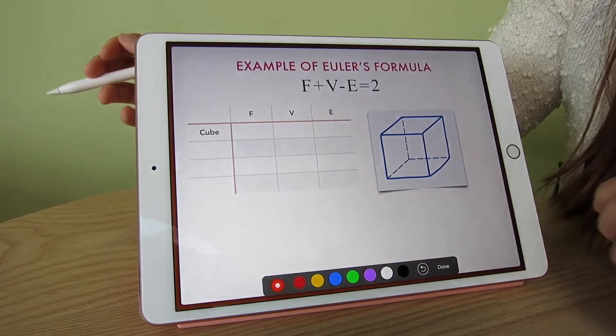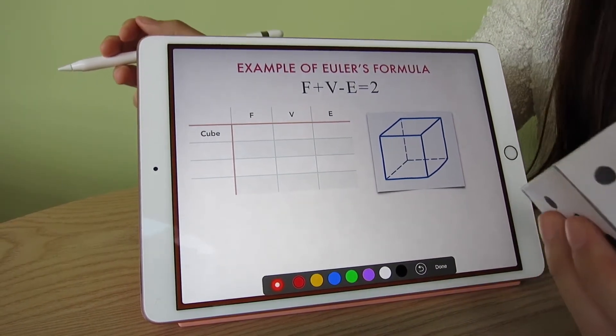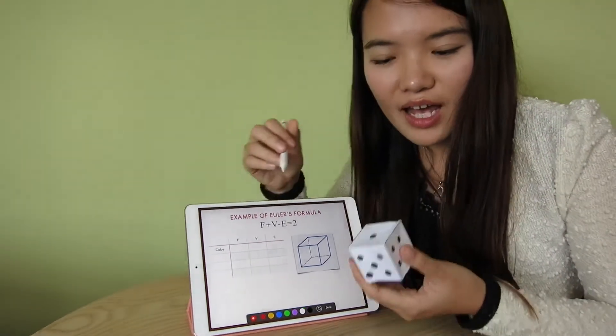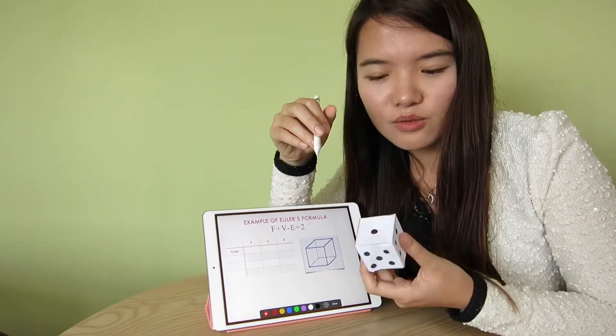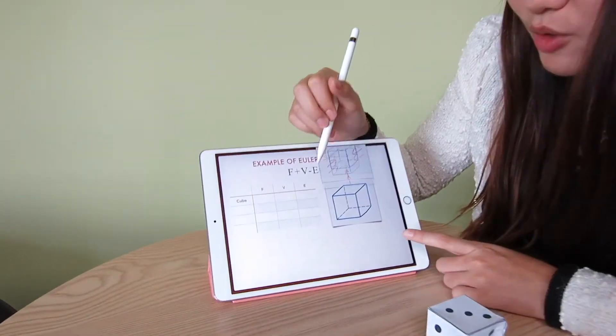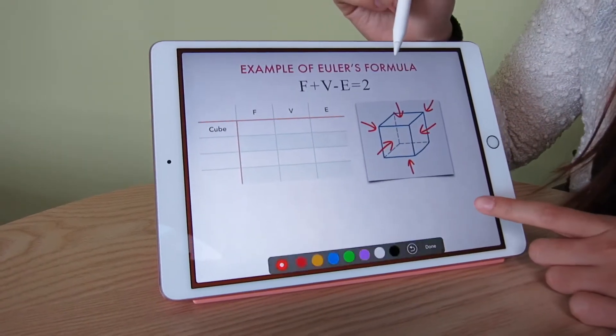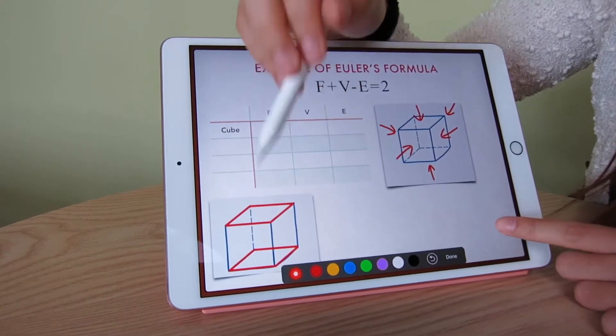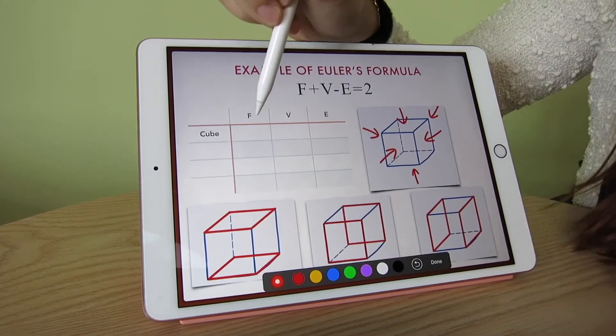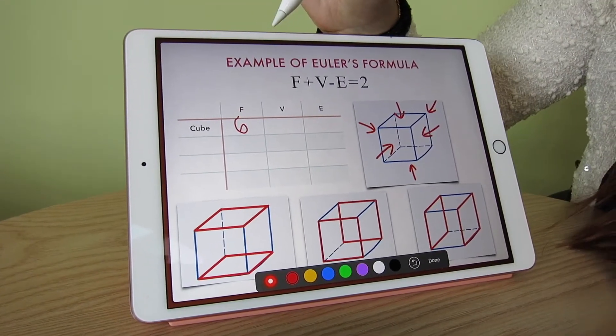There are so many different examples. I will tell you one simple example by having a cube. For F, the faces: how many faces are there for the dice? Well, obviously there are 6 in total—the upper one and lower one, the back one and the front one, and also left and right. So in total, the faces will be 6.